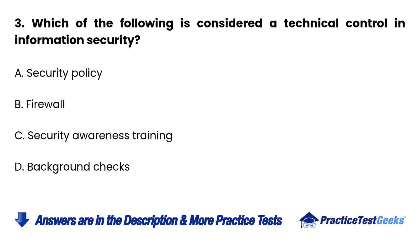Question 3: Which of the following is considered a technical control in information security? A. Security policy. B. Firewall. C. Security awareness training. D. Background checks.